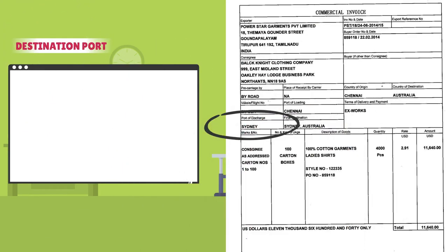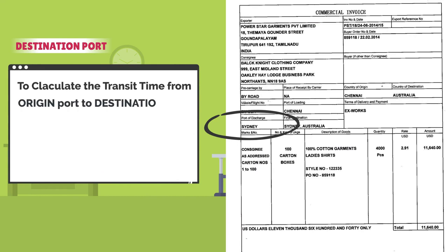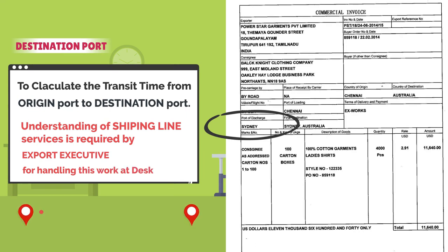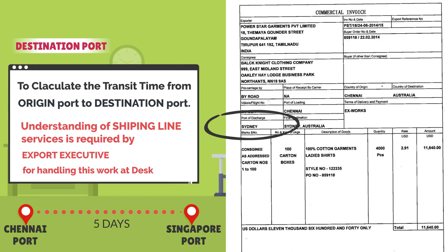Destination port: to calculate the transit time from origin port to destination port. Good understanding of liner service is required by the export executive. For example, transit time is 5 days from Chennai port to Singapore port.